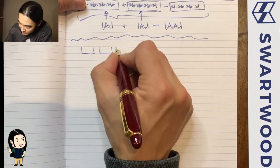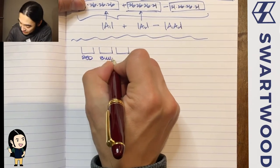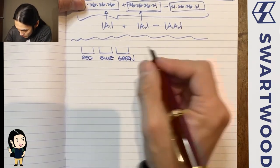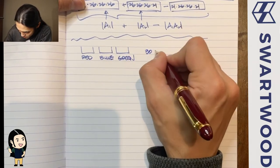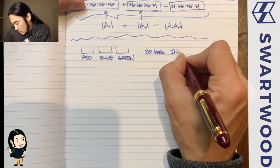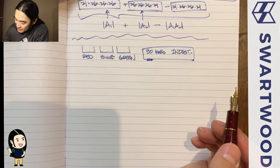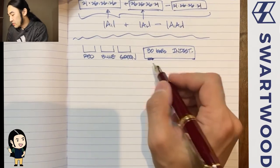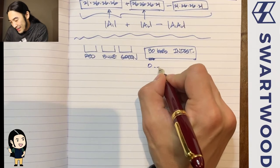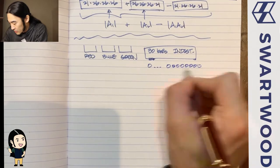Let's say we have three distinguishable urns — a red urn, a blue urn, and a green urn — and we have 30 indistinguishable balls. Let's review the counting method: imagine lining up all 30 balls, and you want to encode the three containers using dividers.